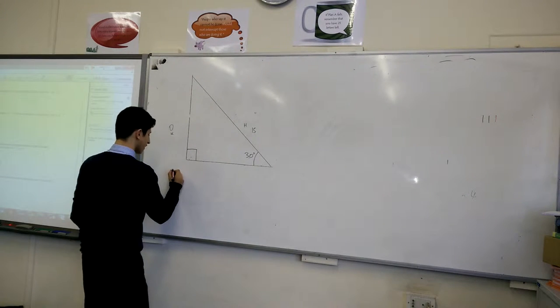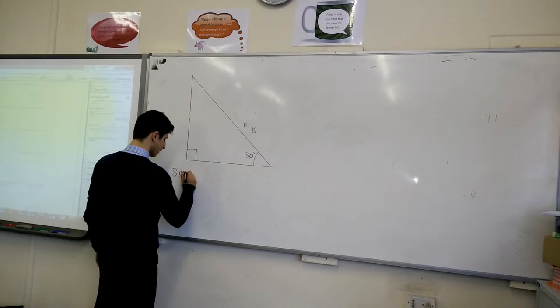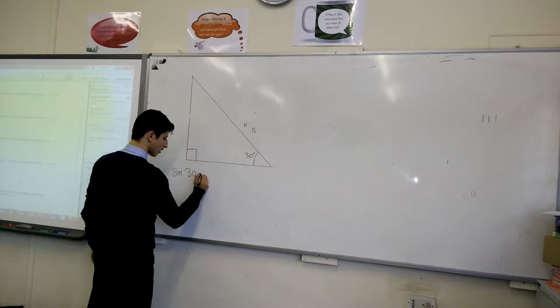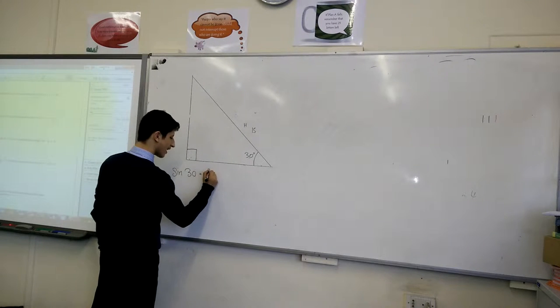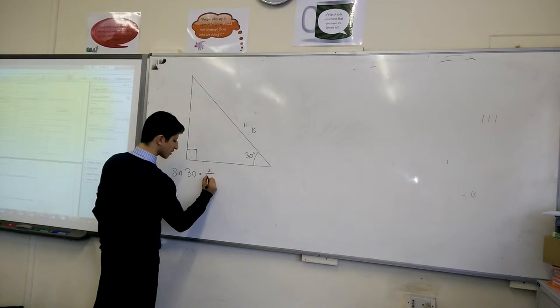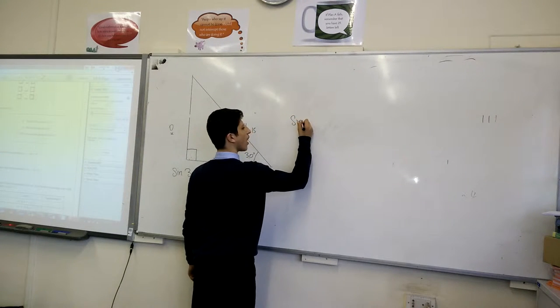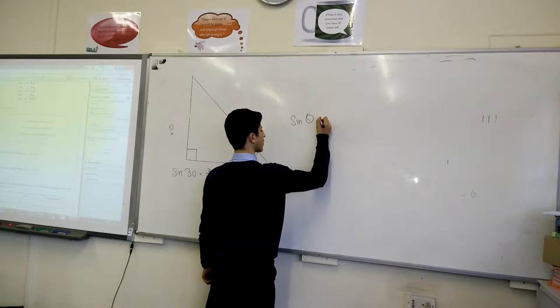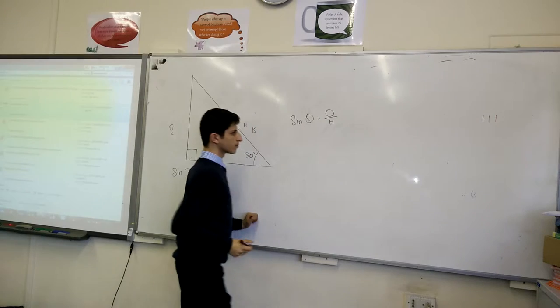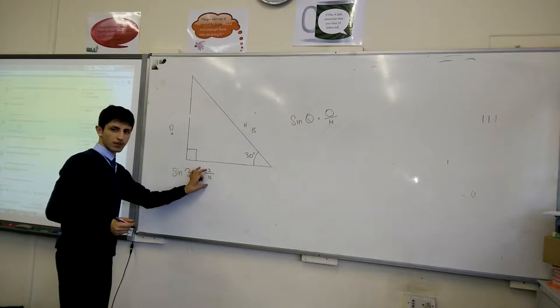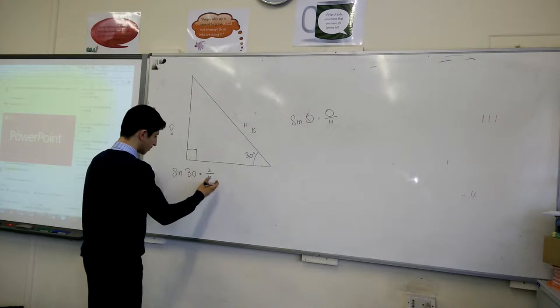The equation for this is sine theta, in this case sine 30, is equal to opposite, which in this case is X, over the hypotenuse, which is 15. The sine theta equals opposite, which is given as O over H. It's a ratio, really, the ratio of the side and the sine of the angle.